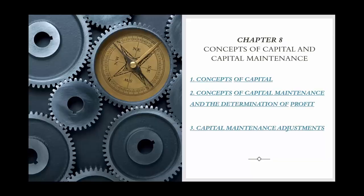In this chapter, we will cover the following key topics: 1. Concepts of capital — understanding the financial and physical concepts of capital, and how entities choose the appropriate concept based on user needs. 2. Concepts of capital maintenance and the determination of profit. 3. Capital maintenance adjustments — adjustments related to the revaluation or restatement of assets and liabilities, and their impact on equity and profit reporting.